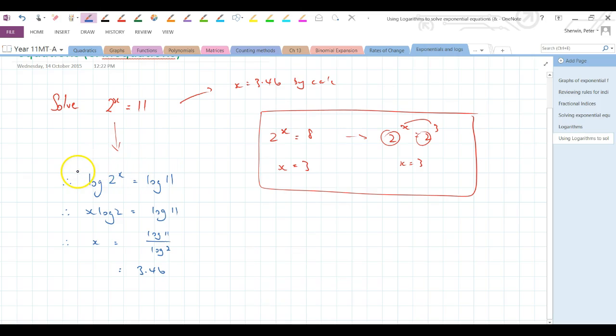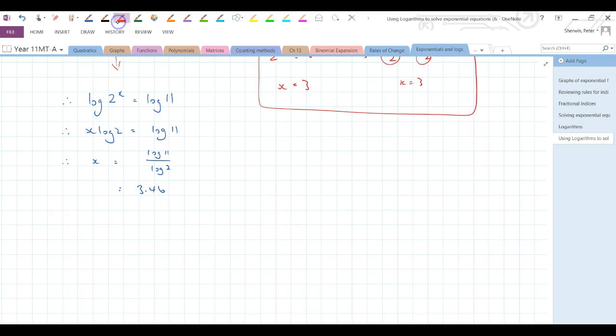It's really logging both sides, then activating power law. Power law enables us to get the power out and into the front, and that means we can use our techniques of solving that we've already become well accustomed to, to finding out what x is. Okay, so let's have a look at another example, different type of example.